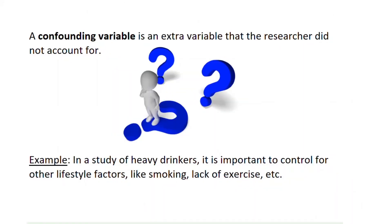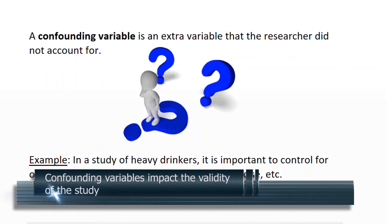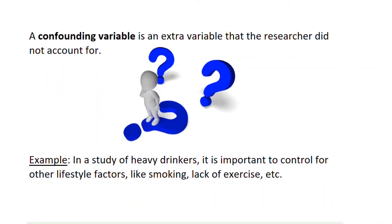When designing a study it's very important to account for all the variables that may impact what you're studying. A confounding variable is an extra variable that the researcher didn't account for. An example might be in a study of heavy drinkers, it will be very important to control for other lifestyle factors like smoking. If you didn't control for smoking, that would be a confounding variable, and then if at the end of the study you found negative health effects, you wouldn't be able to say whether that was from the drinking or the smoking.